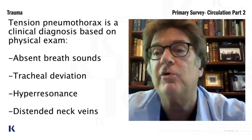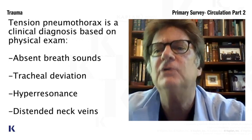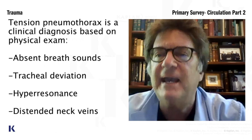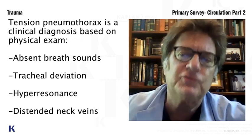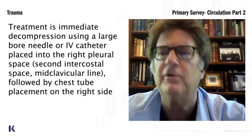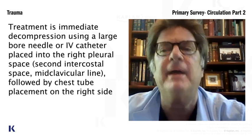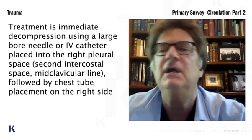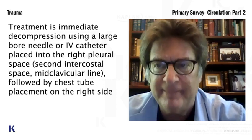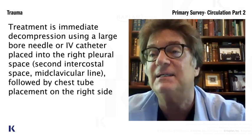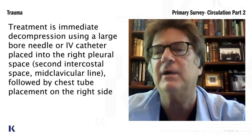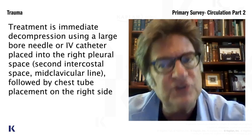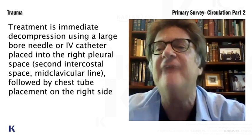Very importantly, the heart can't fill — that's critical. So how do you treat a tension pneumothorax? You put a needle into the second intercostal space, decompressing the tension pneumothorax and converting it to a regular simple pneumothorax. You do need a chest tube, but the test question and life question is: you put in the chest tube after you decompress with the needle.